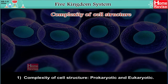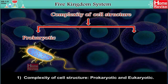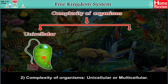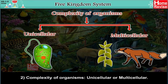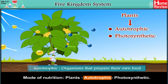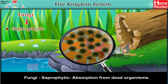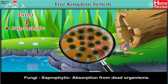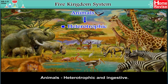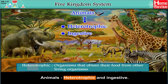Criterion 1: Complexity of cell structure — prokaryotic and eukaryotic. Criterion 2: Complexity of organisms — unicellular or multicellular. Mode of nutrition: Plants are autotrophic, meaning organisms that prepare their own food. Fungi are saprophytic, obtaining food by absorption from dead organisms. Animals are heterotrophic and ingestive — heterotrophs obtain their food from other living organisms.